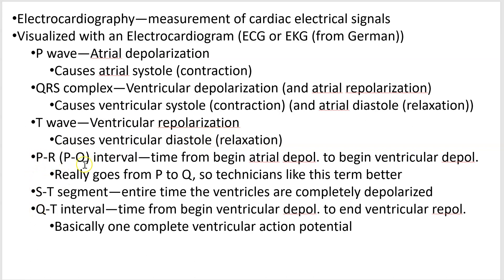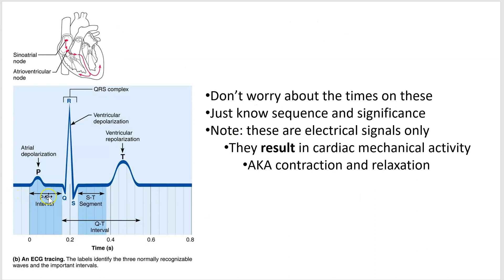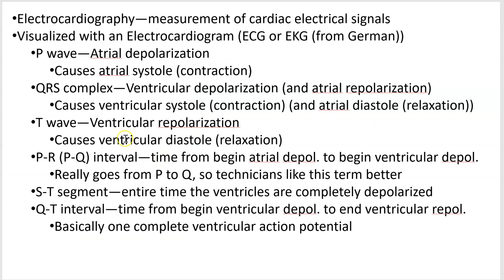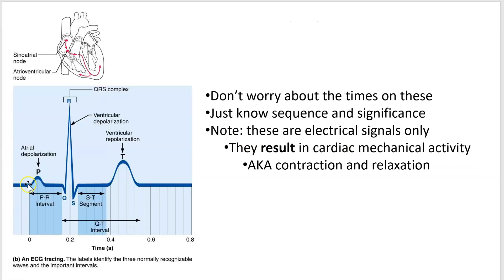These intervals are important, especially for a cardiologist, and there are more than these that can be measured — I'm just giving you a few. There's the PR interval, which goes from P to Q. Technicians like to call it the PQ interval. I'll go with PR since that's most commonly used. This is the time from the beginning of atrial depolarization to the beginning of ventricular depolarization.